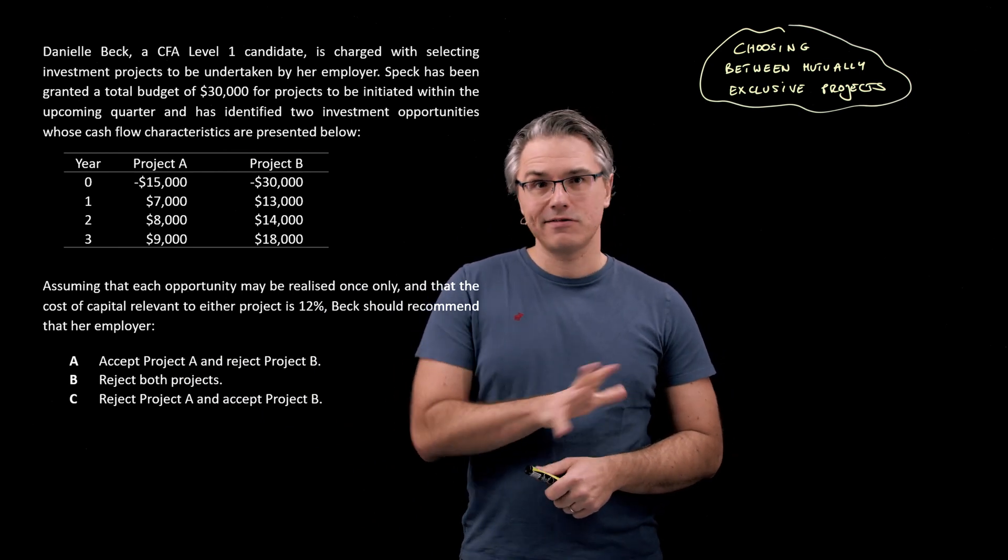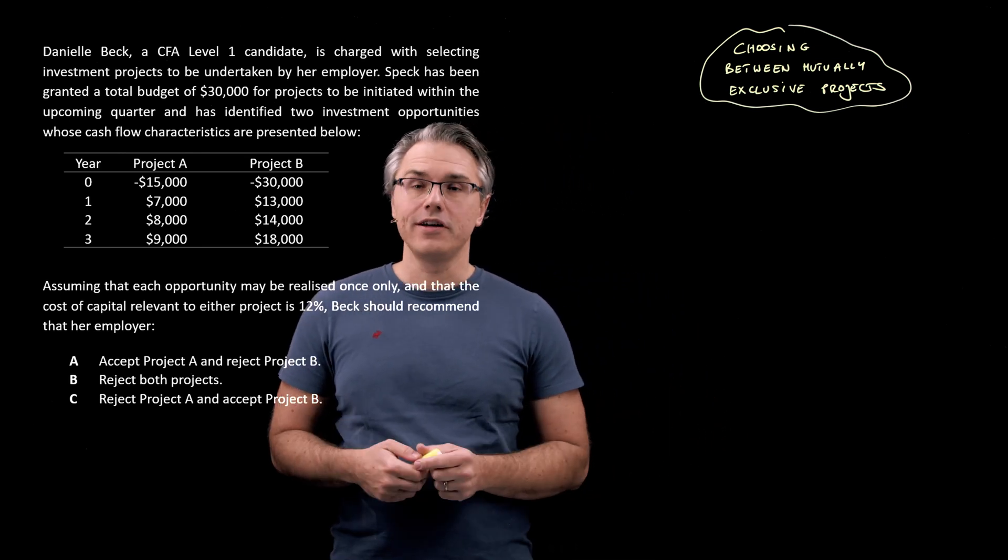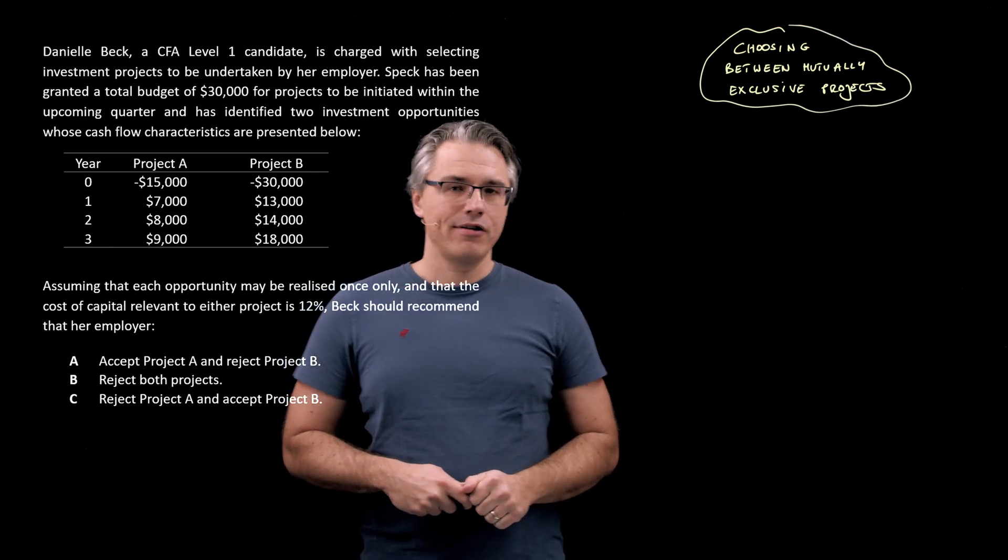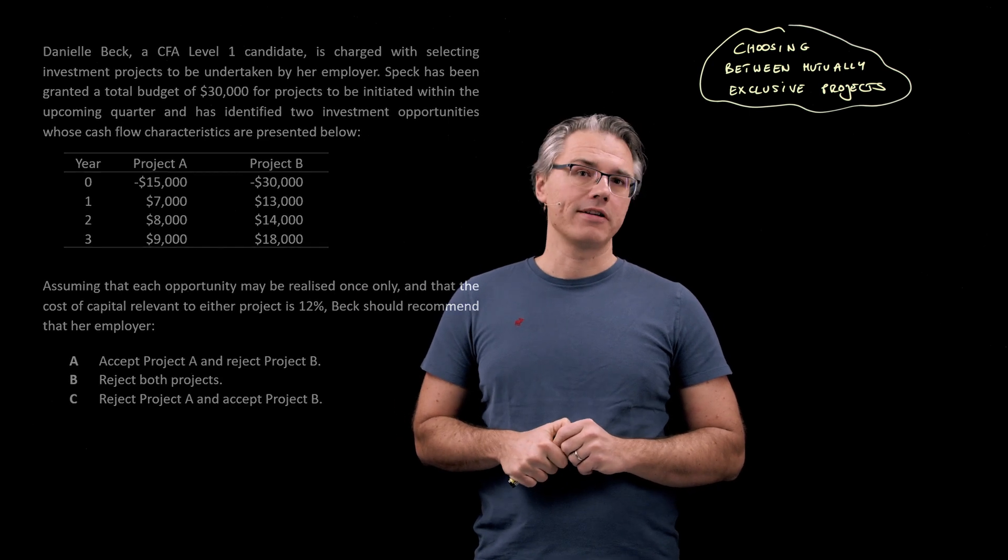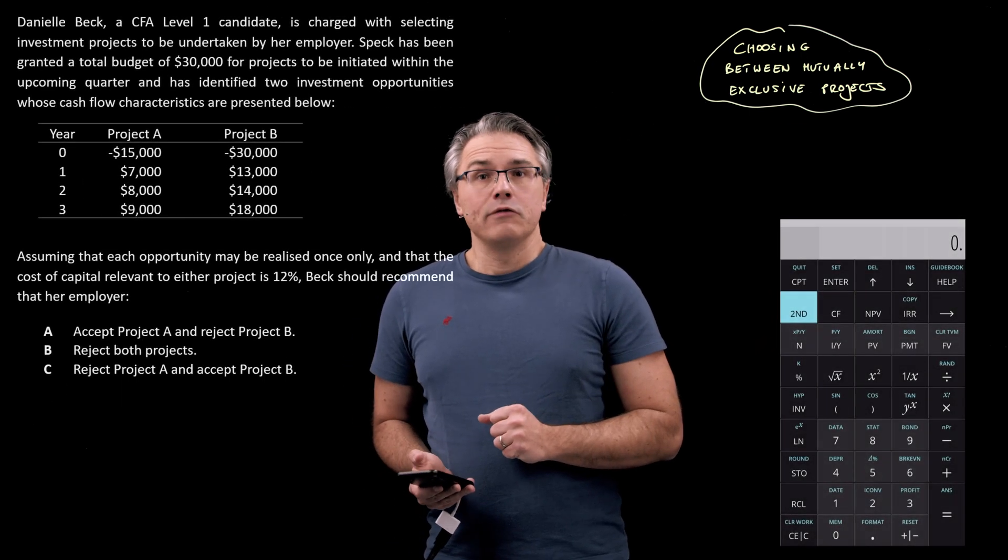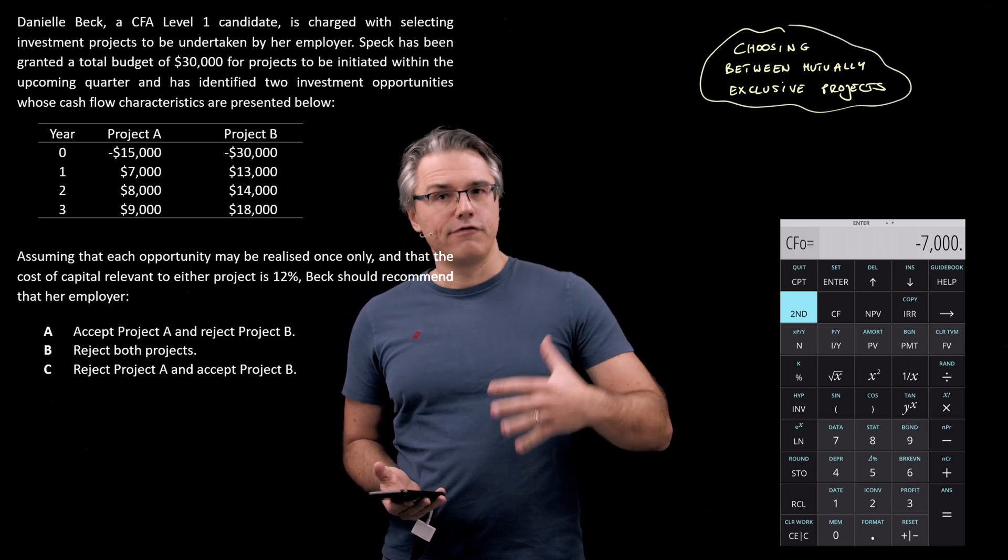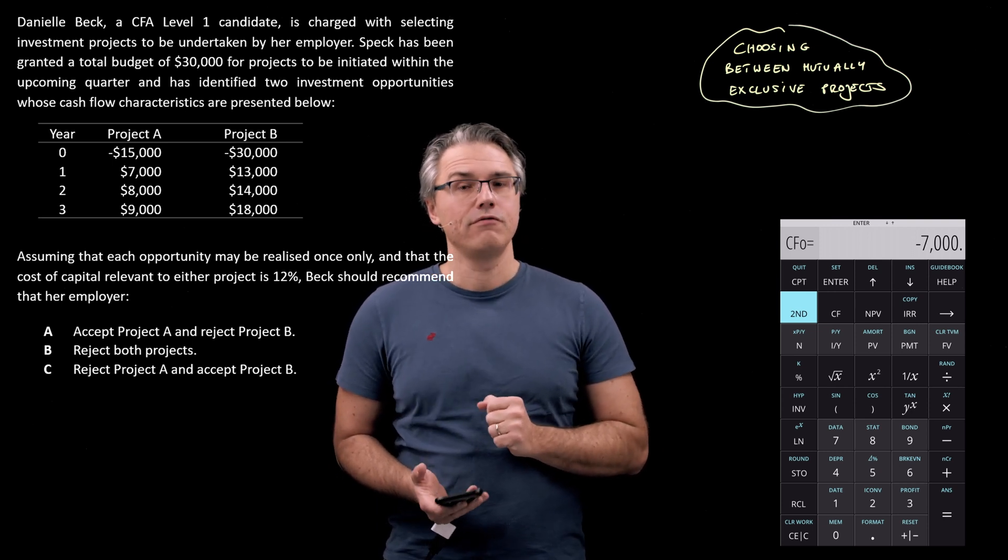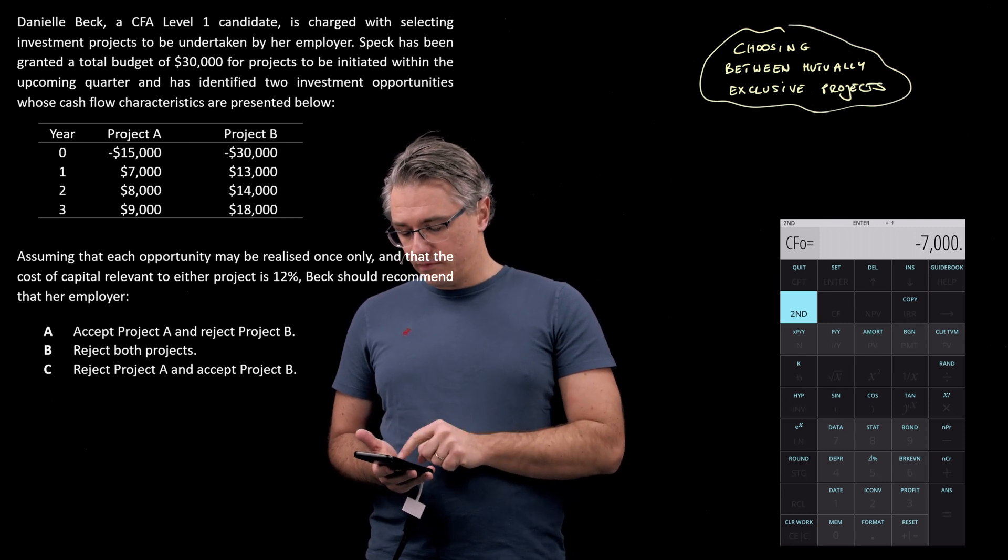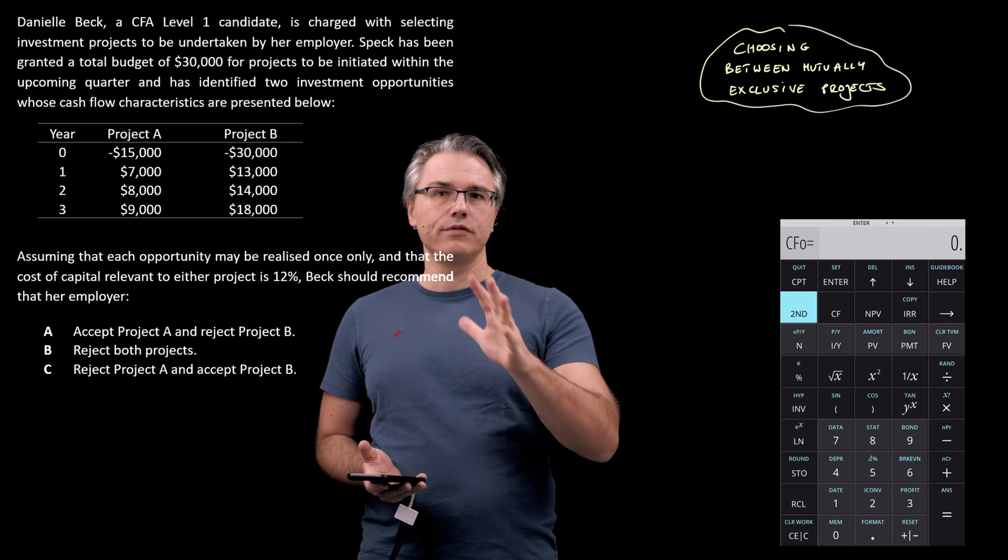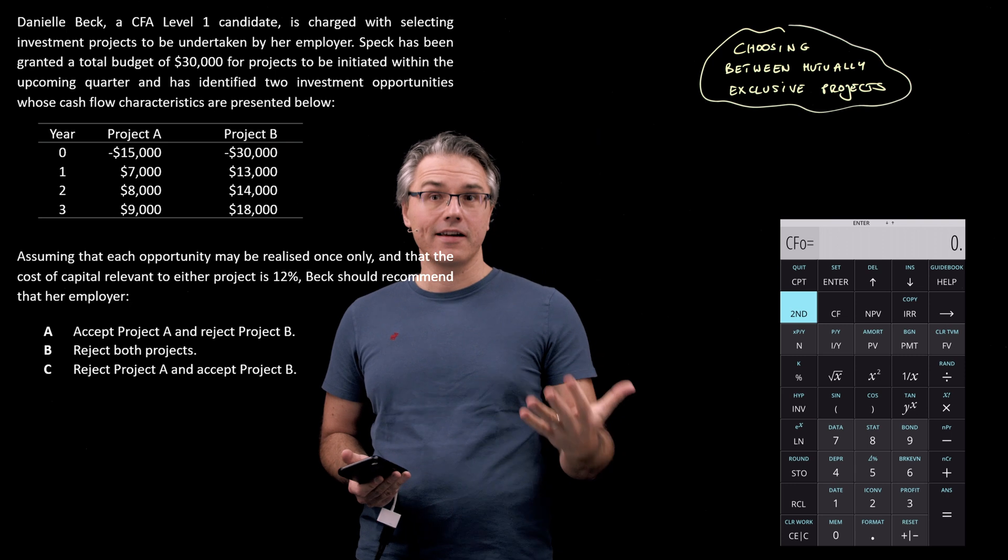Now, what I want us to do is straight away go to the calculators and use the cash flow worksheet in combination with NPV and IRR functions to input this data and compute the relevant metrics. Okay, we'll be working with the cash flow worksheet. So let's press CF, and as you can see I've got some data here from a previous question, so always clear the cash flow worksheet first when you're switching from question to question. Second followed by CE/C at the bottom of your calculator. Remember you've got to be in the cash flow worksheet for this to actually clear the data.